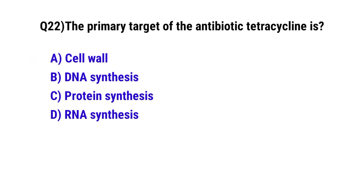Question number 22. The primary target of the antibiotic tetracycline is. The correct option is C: protein synthesis.